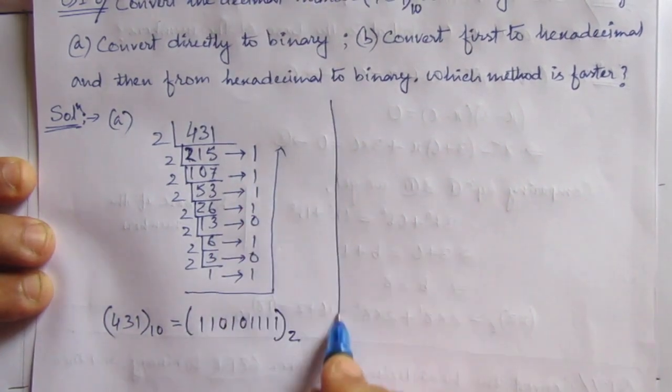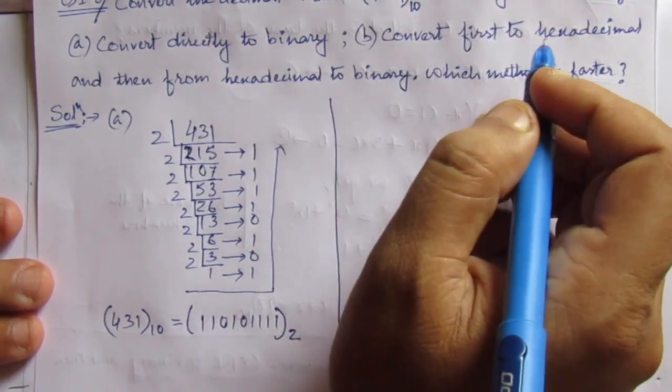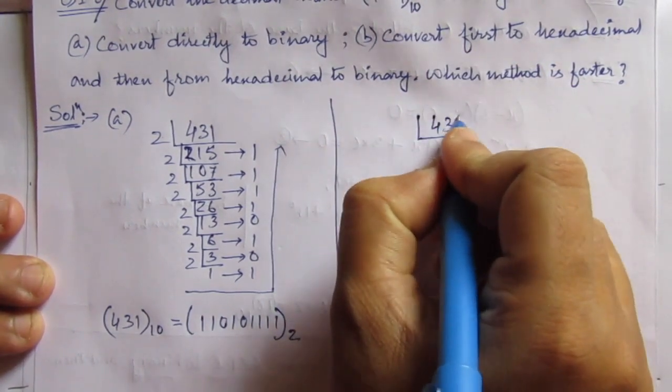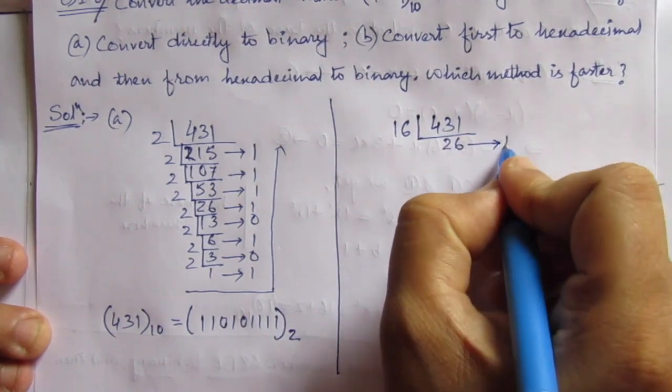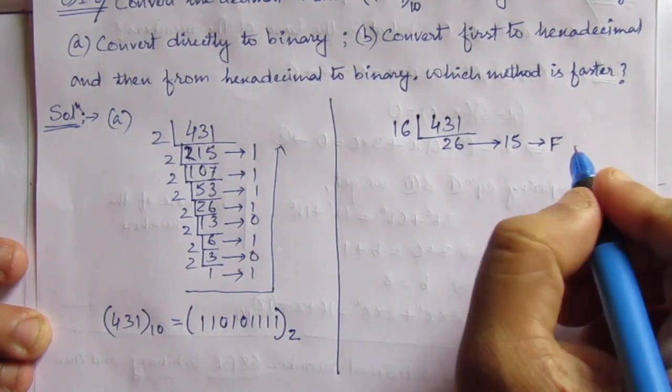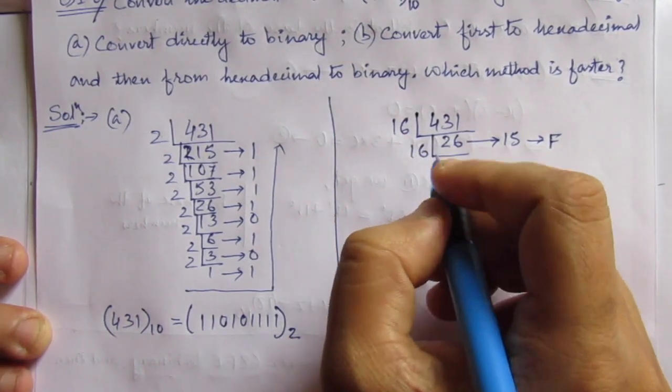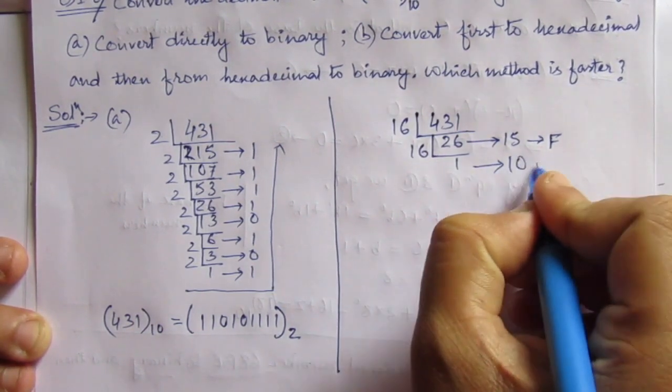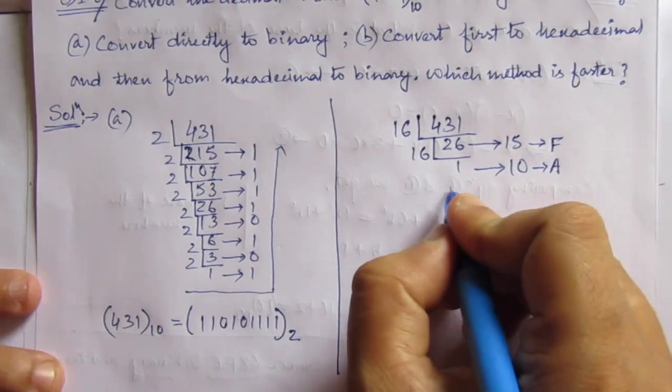In this side, we will try to find out following the second method. First of all, we have to convert to hexadecimal. We have to divide 431 by 16. Here the remainder is 15, that means F in hexadecimal. Then again, we divide by 16 and we get 1 with remainder 10 which is A in hexadecimal.